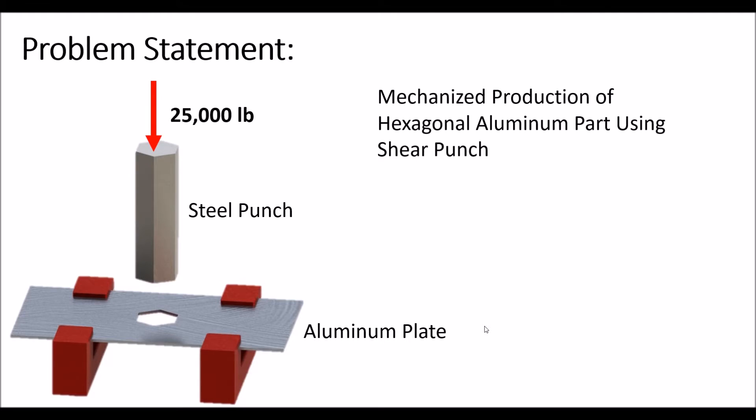The problem statement is that we have a mechanized production of hexagonal aluminum pieces using a steel shear punch. From the picture on the left you can see that we have 25,000 pounds pressing down upon the steel punch, and the steel punch is then pressing against the aluminum plate that will punch out the hexagonal piece.